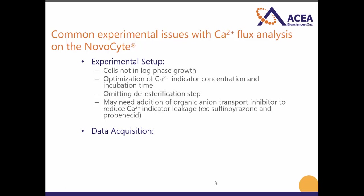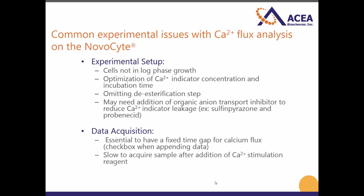Other issues can arise from problems with data acquisition. For the NovaCyte, it is essential to have this 'fixed time gap for calcium flux' checkbox selected when appending data. Without it, the gap between the appended data will be variable and very large. Secondly, an issue in data acquisition can occur if the appended data is acquired too slowly after the addition of the calcium stimulant reagent. This can result in you missing the response in its entirety. Finally, if there's incomplete rinsing of the SIP tube and line after acquisition between samples, it can result in a changing baseline. So the baseline fluorescence increases over time, which is usually due to residual calcium stimulation reagents in the line.